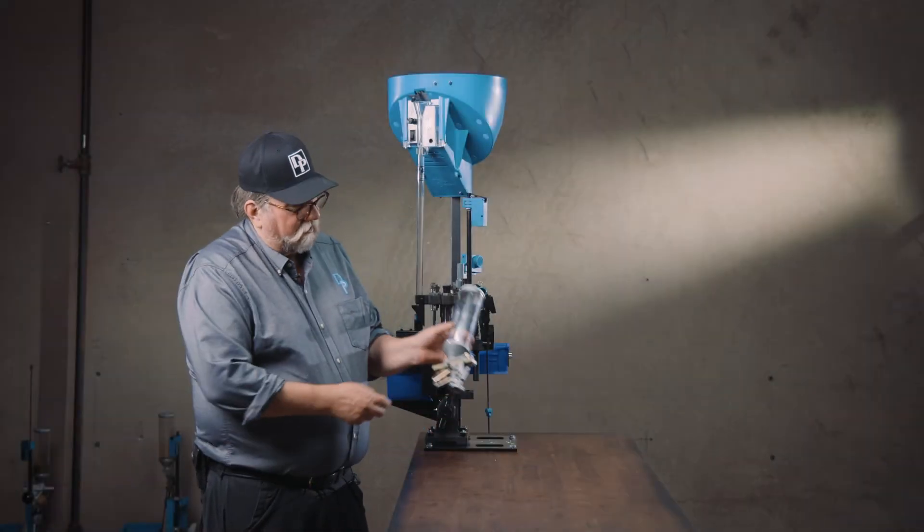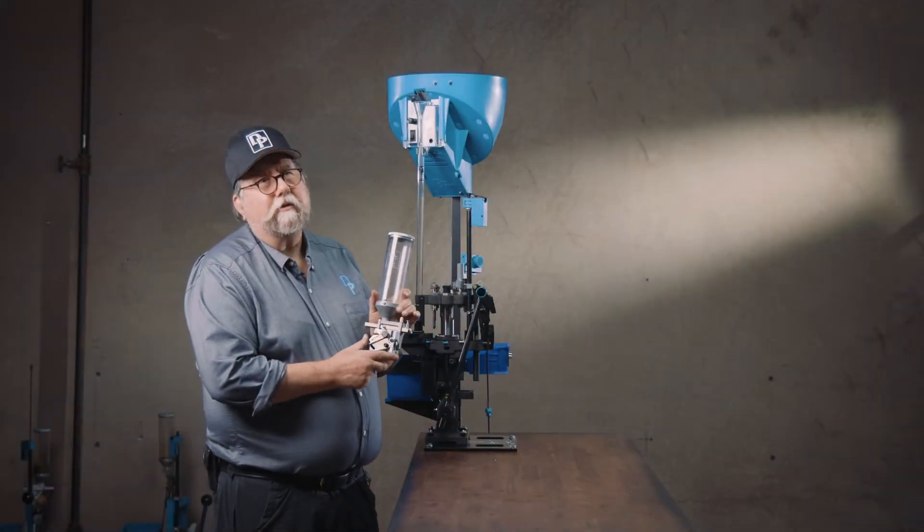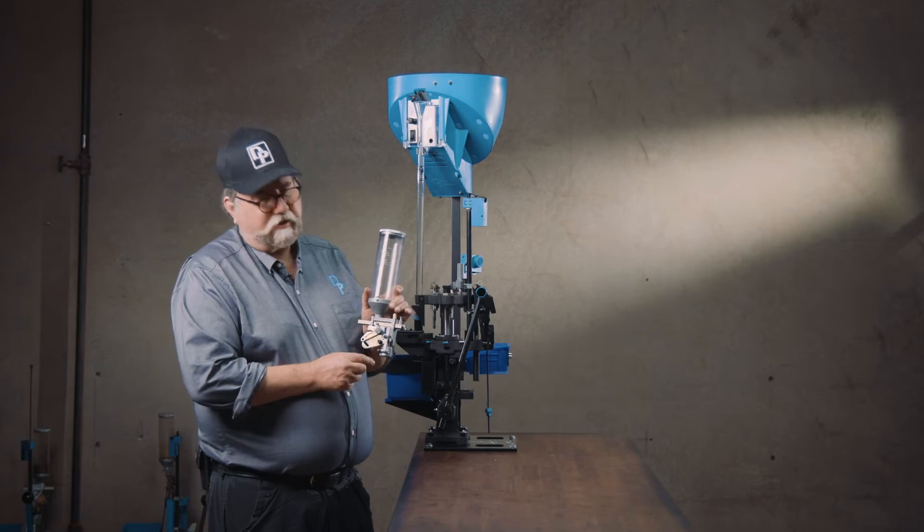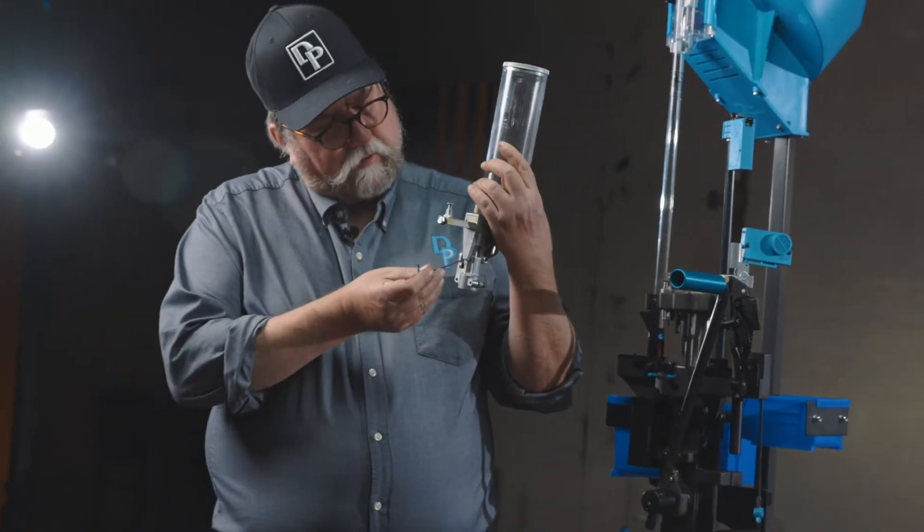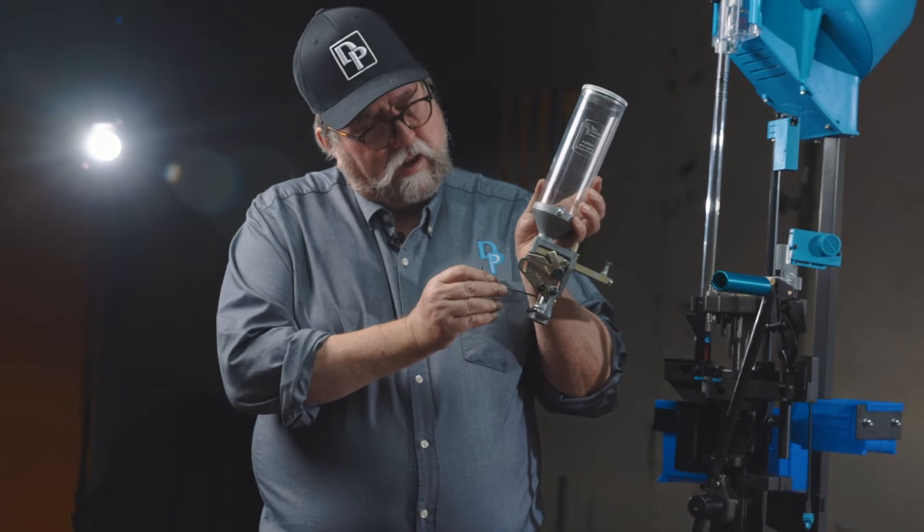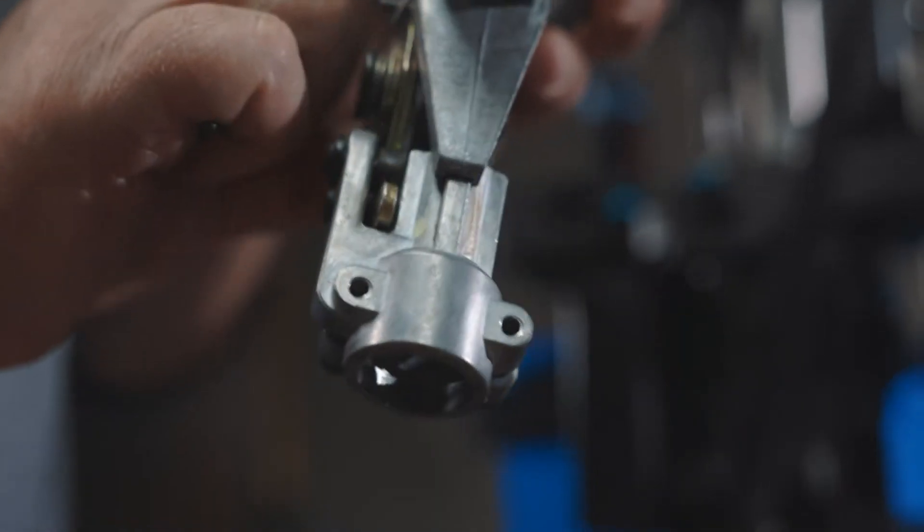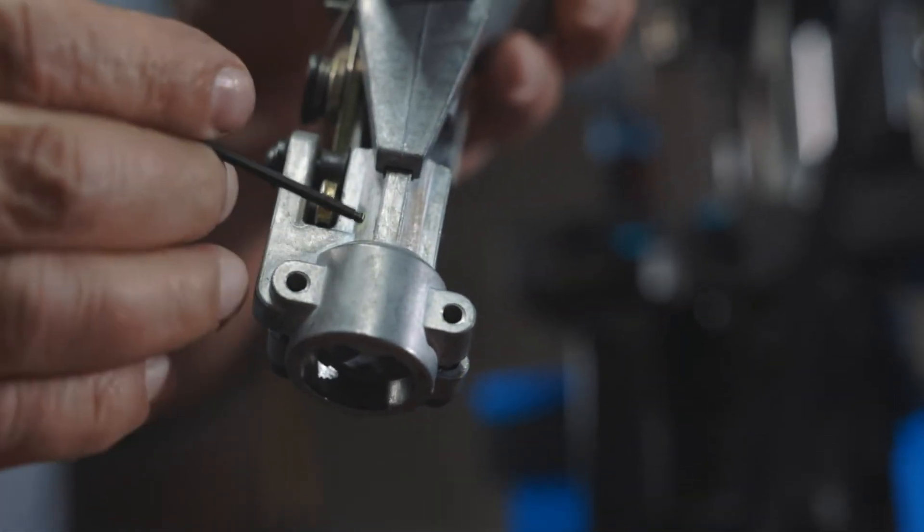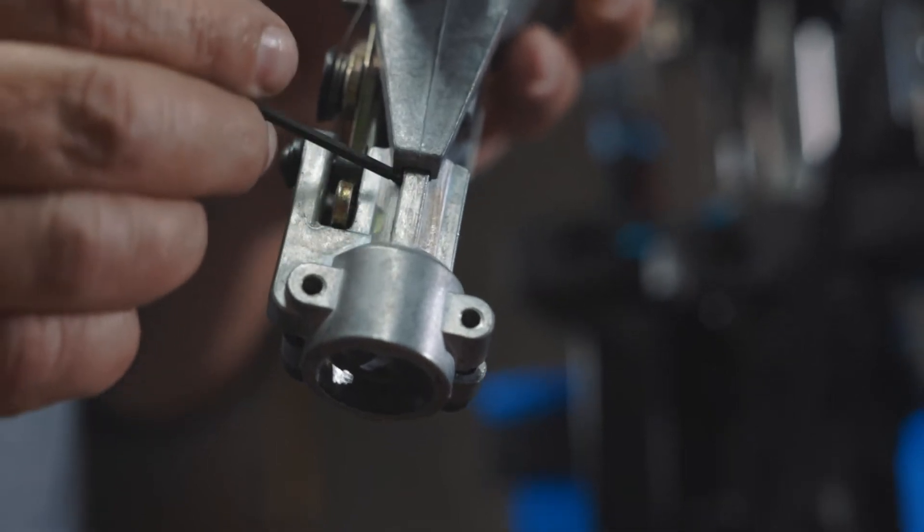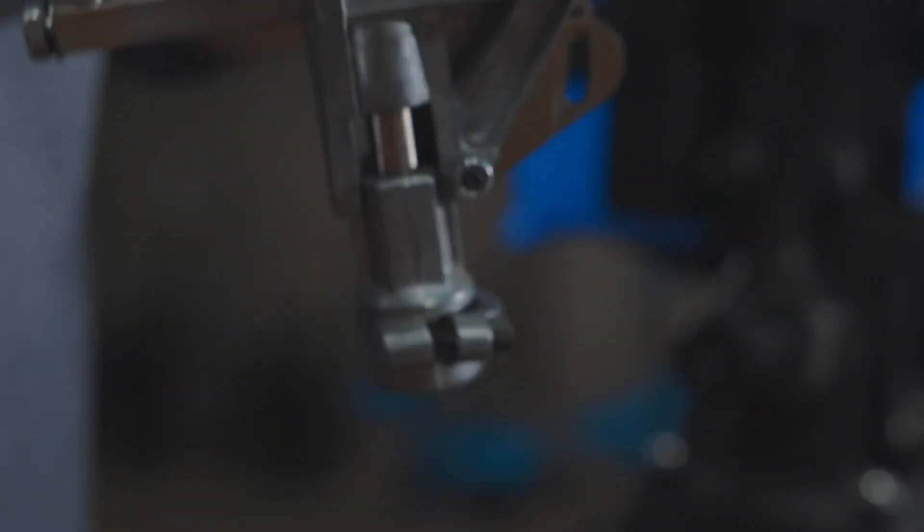On the powder measure there's a few points that need to be greased probably every 50,000 cycles. On the front and back of the connector body collar, where the powder measure body slides up and down on it, there are a couple of vertical rails. Those need to be greased.